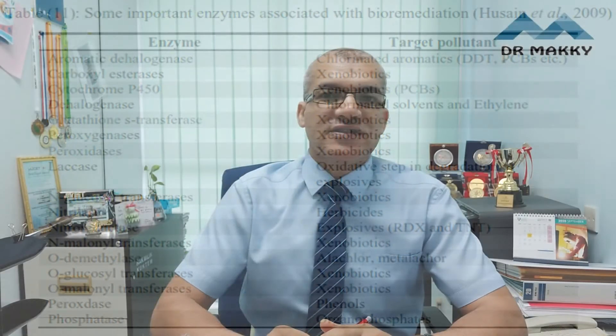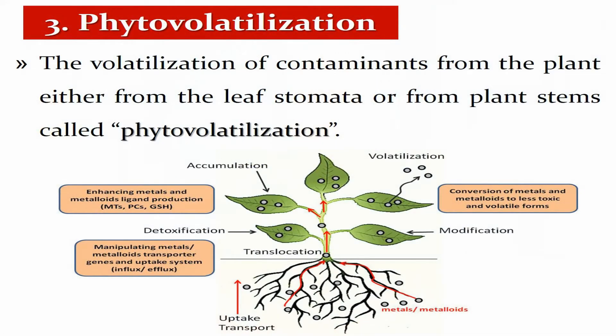Another mechanism is phytovolatilization, where volatilization of contaminants occurs from the plant — either from the leaf stomata, which are pores on the surface of the leaves, or from the plant stems. As shown in this figure, contaminants in the soil are taken up and transported from the soil to the roots, then translocated from the roots to the stems and leaves. Finally, the pollutants can be volatilized through the leaf stomata.